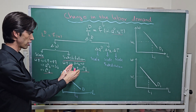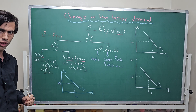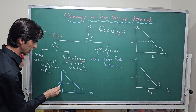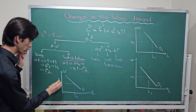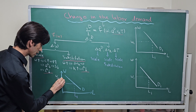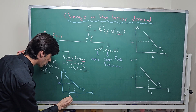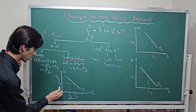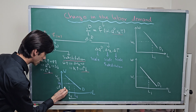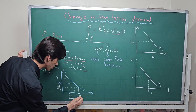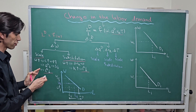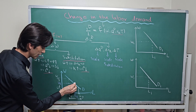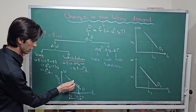In both cases — scale effect and substitution effect — labor demand decreases. We can show this graphically as a movement along the labor demand curve. If the initial wage is w1 and w1 increases to w2, the demand for labor decreases from L1 to L2. If the wage level decreases from w1 to w3, the demand for labor will increase from L1 to L3. In both cases, when the wage level changes, we move along the labor demand curve.